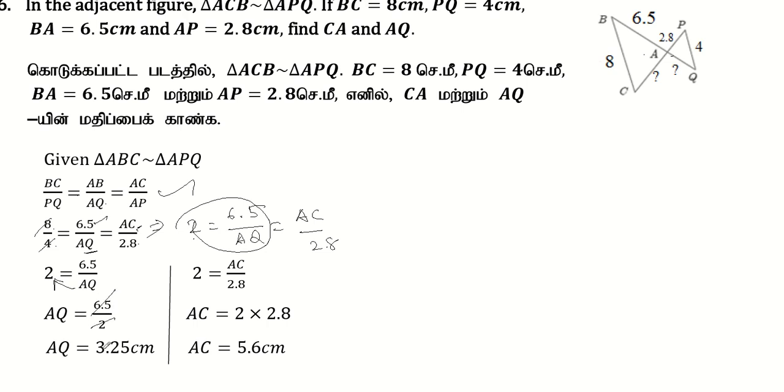From the second equation, 2 equals AC divided by 2.8. Solving for AC, we multiply to get AC equals 2 times 2.8, which equals 5.6cm.